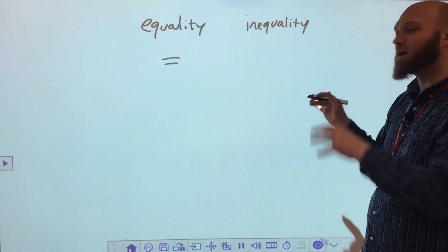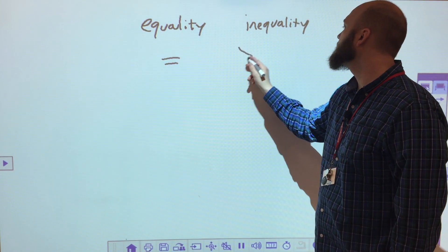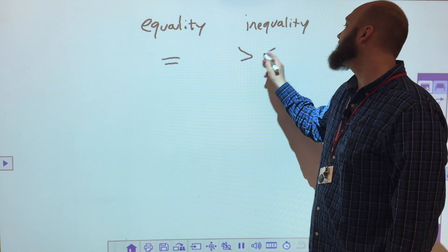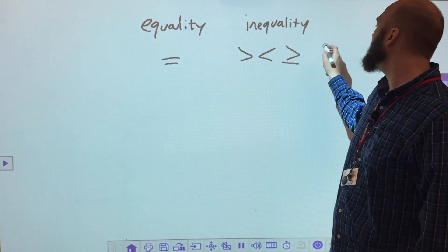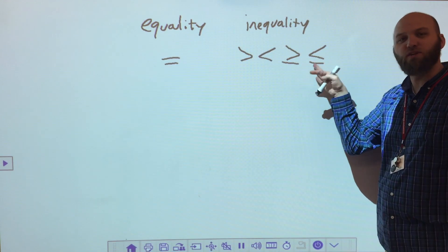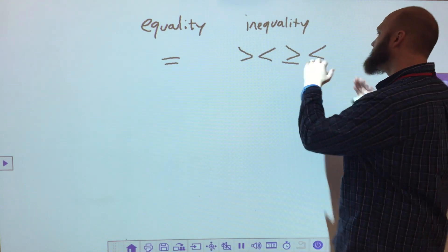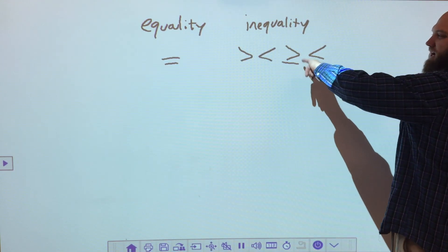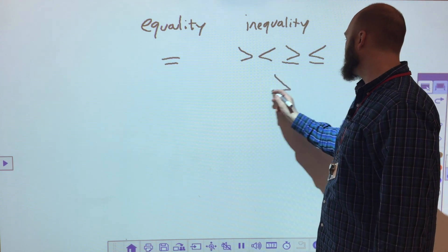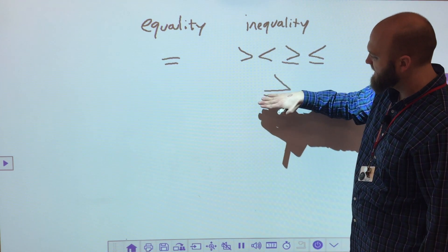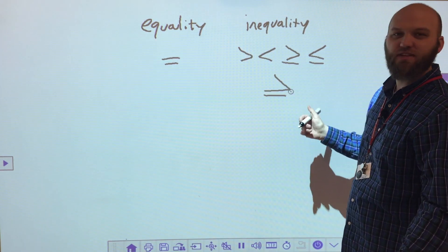So typically in an inequality, we have greater than, we have less than, we have greater than or equal to, and less than or equal to. And this is usually a new sign for people because it's sort of a combination, and if I drew it a little better, sort of a combination of an equal sign and a greater than or less than sign.